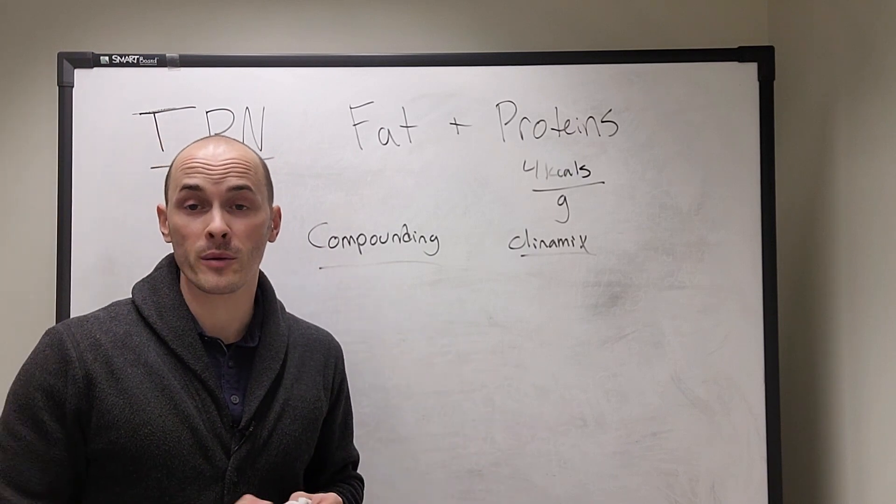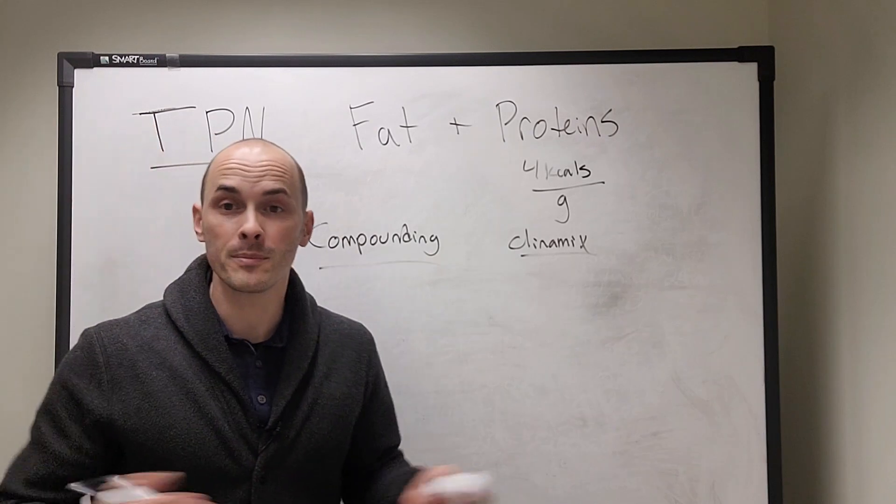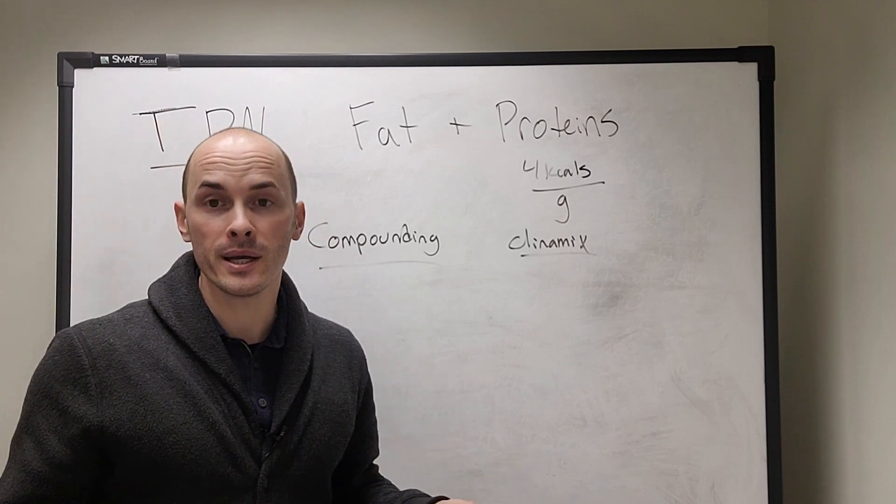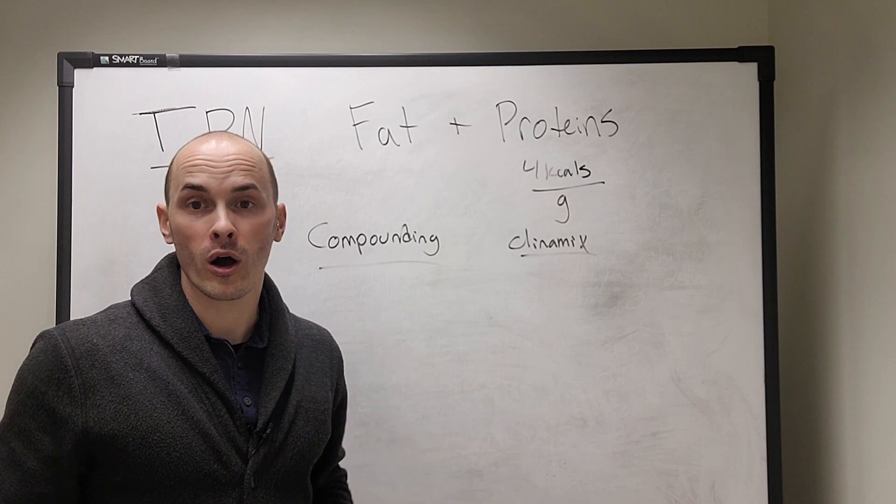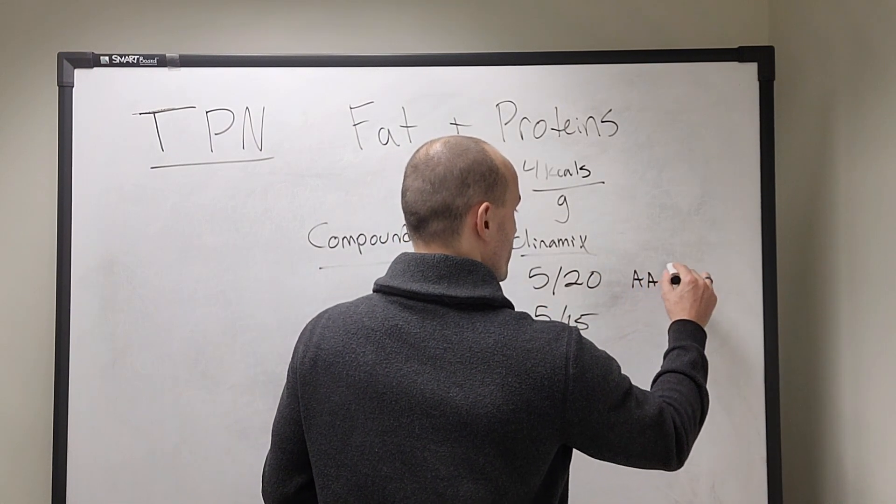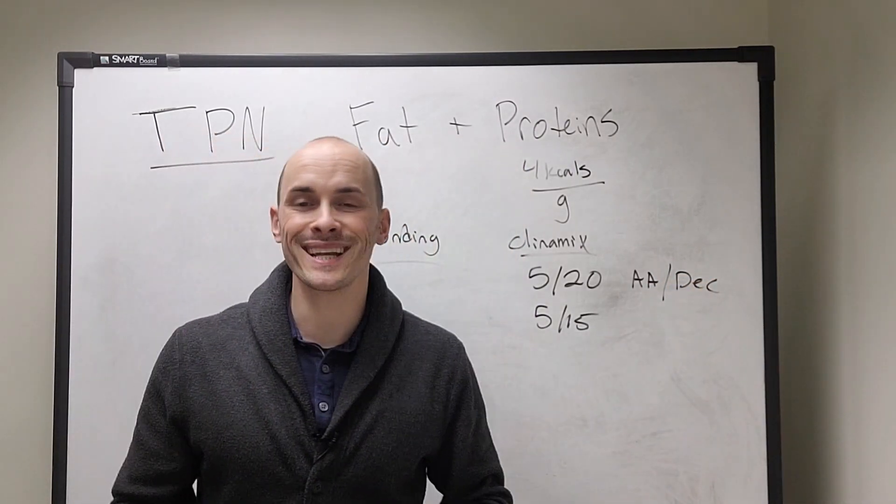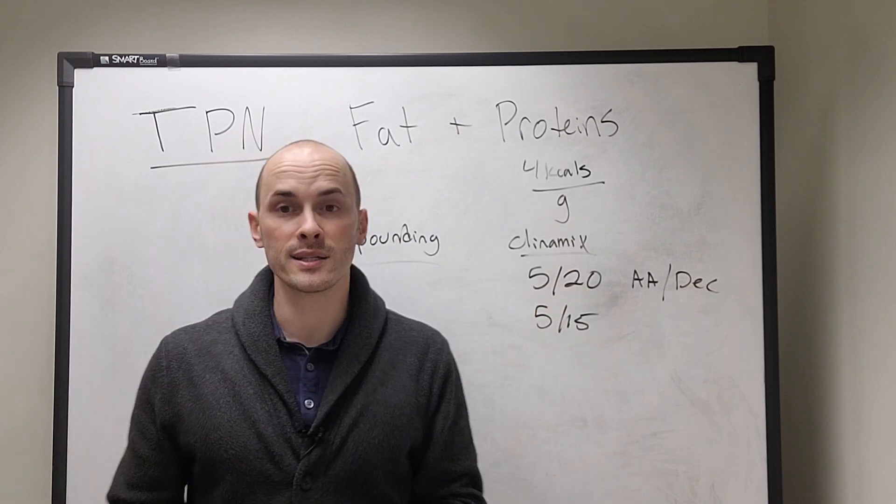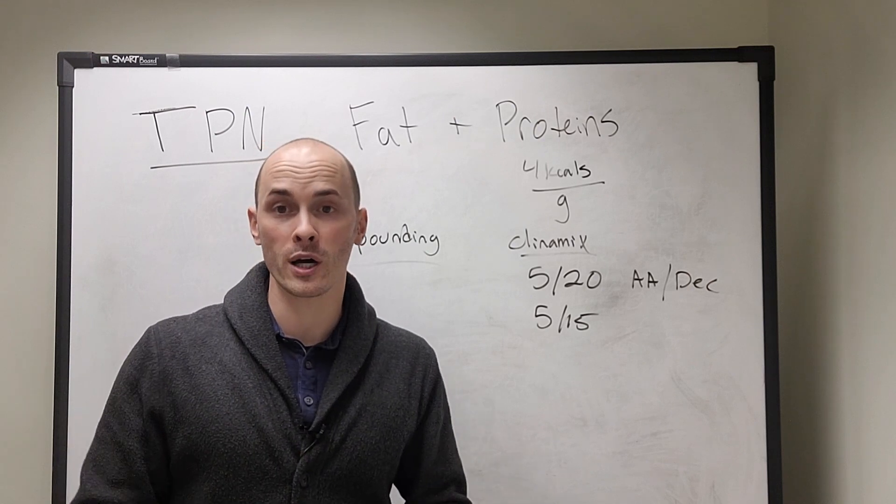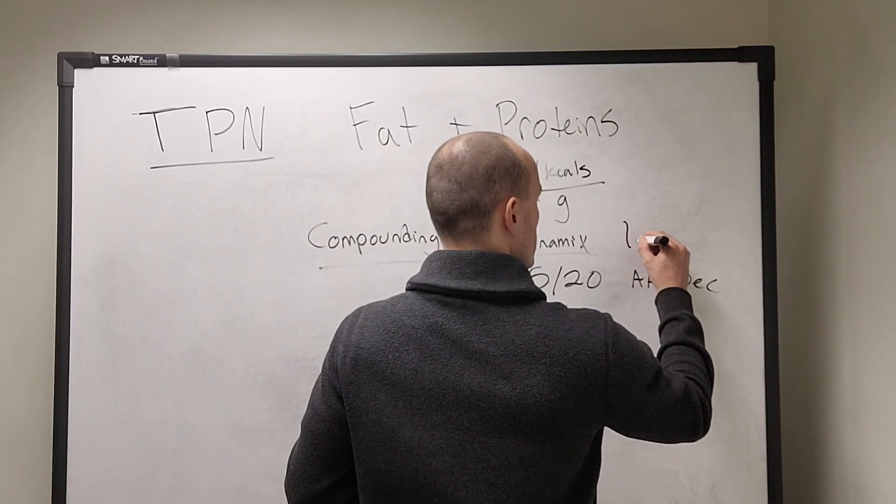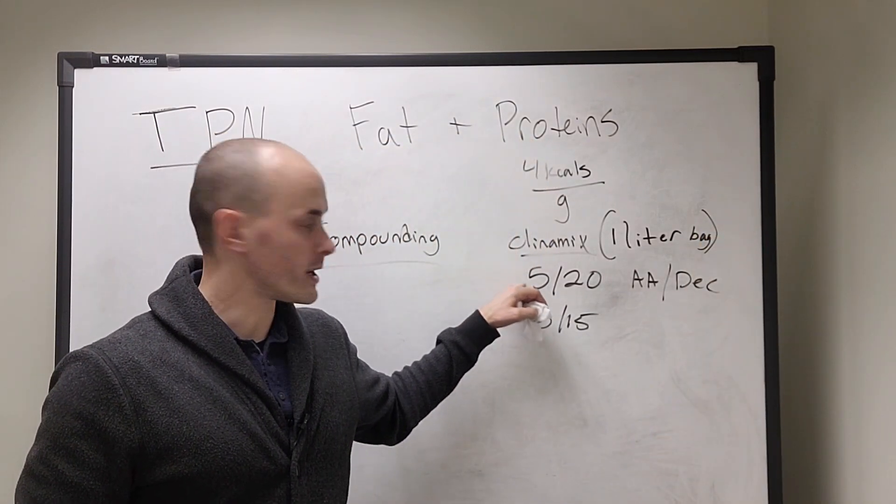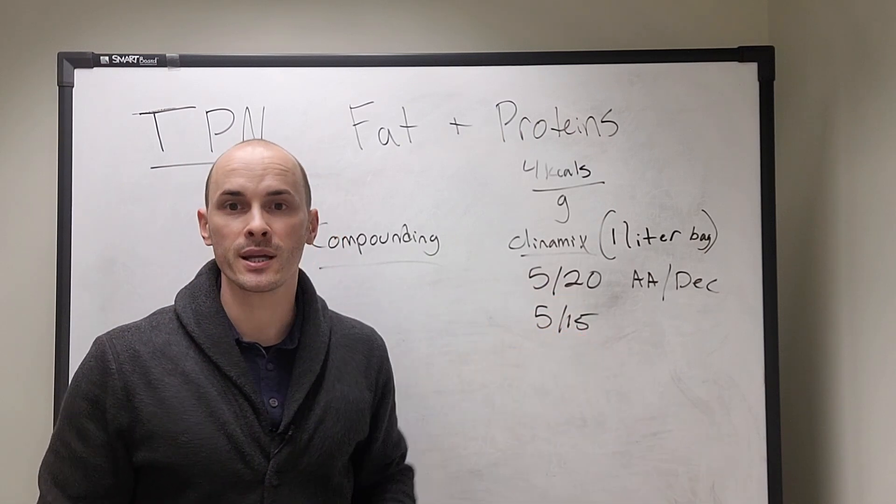So compounding is where you tell the pharmacist, hey, we need 50 grams of protein in this patient's TPN solution. 75 grams, 100 grams. So they can custom make it. Clinimix is these predetermined one liter bags that come in two different concentrations for our TPN patients. The first one is a 520 bag and the other is a 515 bag. What this refers to is the first number is the percent amount of amino acids in the bag. And the second number, this 20 is the percent dextrose in the bag. So if you remember how we said D5 or D20 is 20 grams of protein per 100 milliliters. This one liter bag is 5% amino acids, 20% dextrose, or 5% amino acids, 15% dextrose.